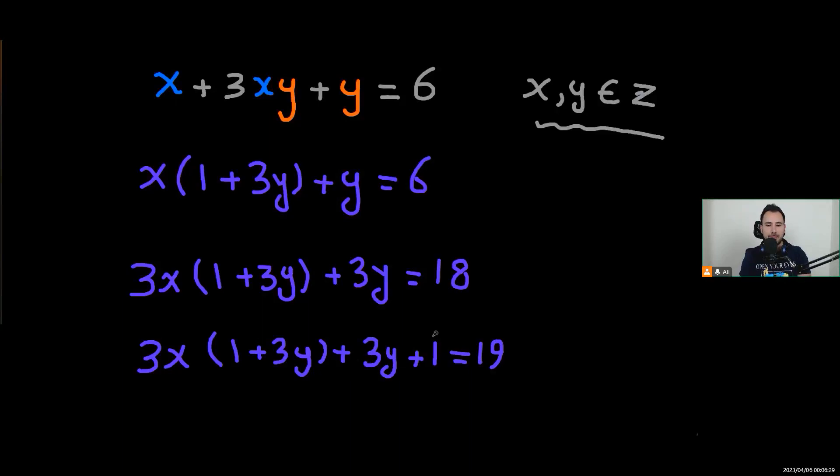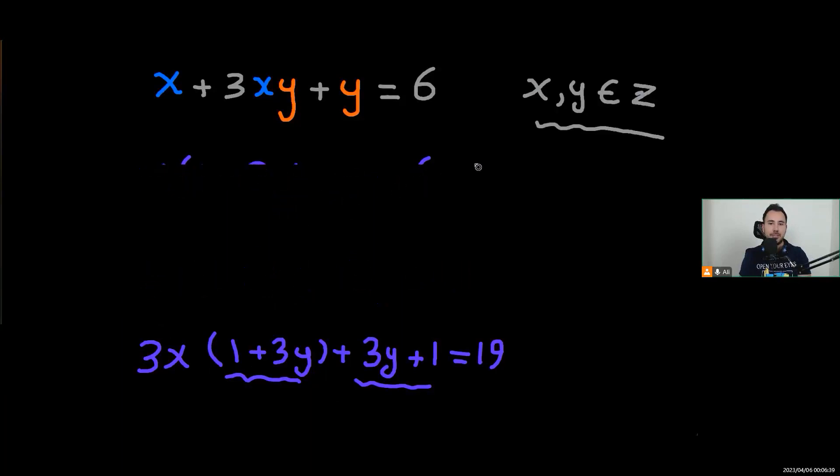So that's the beauty of it. You see, these two are repeating everything. And we could factorize this. So if I factorize 1 plus 3y, well, this term has 3x so I'll write it. Plus, it's itself, so I have to write 1 equals 19.